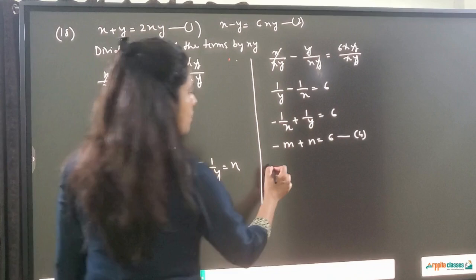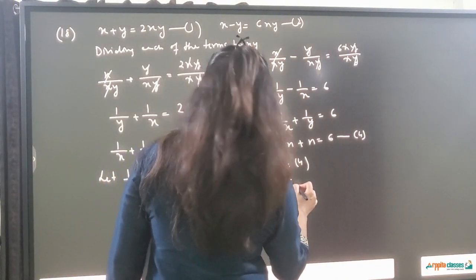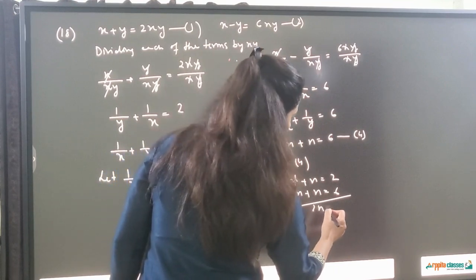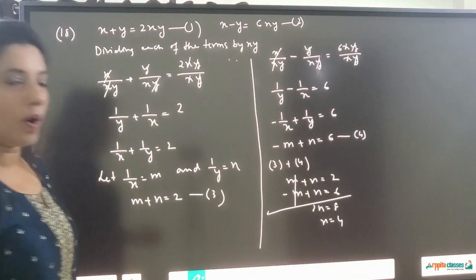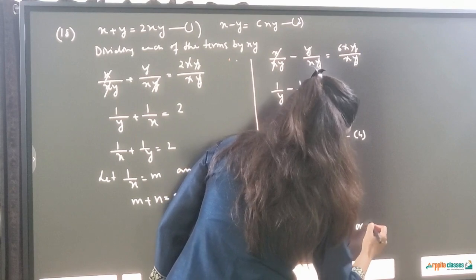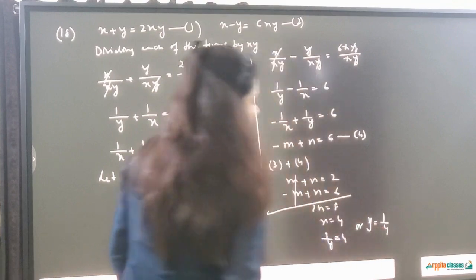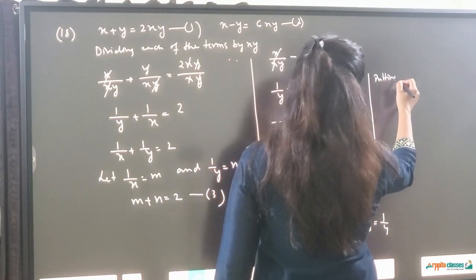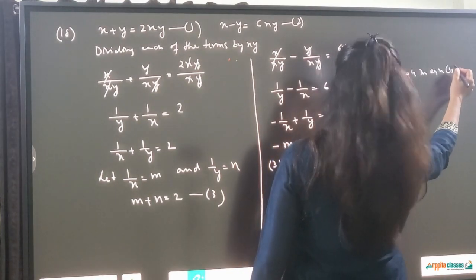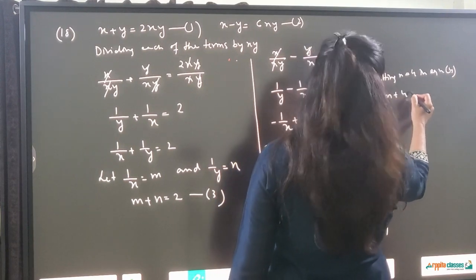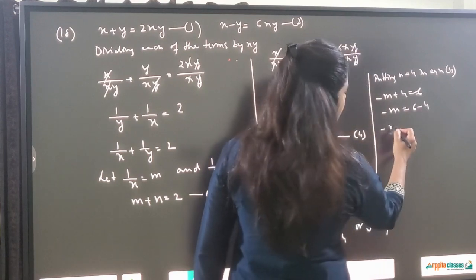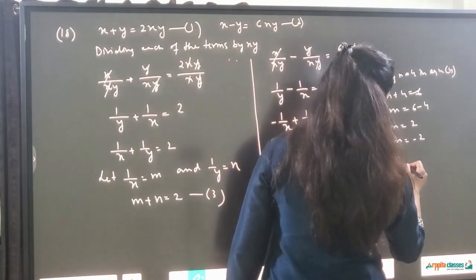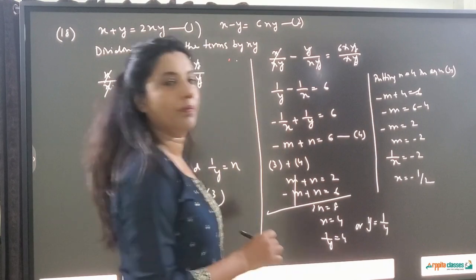Adding equations 3 and 4: m plus n plus (minus m plus n) equals 2 plus 6, giving 2n equals 8 and n equals 4. Since n equals 1 upon y, we get y equals 1 upon 4. Putting n equals 4 in equation 4: minus m plus 4 equals 6, so minus m equals 2, giving m equals minus 2. Since m equals 1 upon x, we get 1 upon x equals minus 2, so x equals minus 1 upon 2.